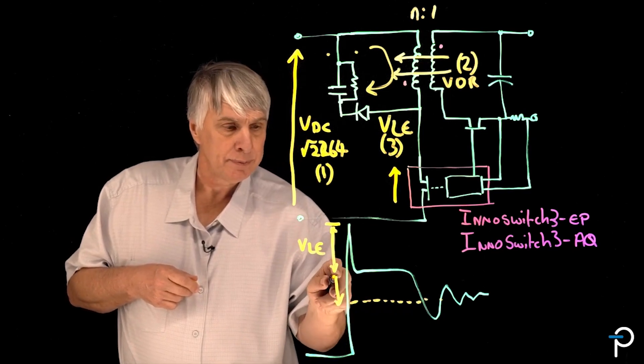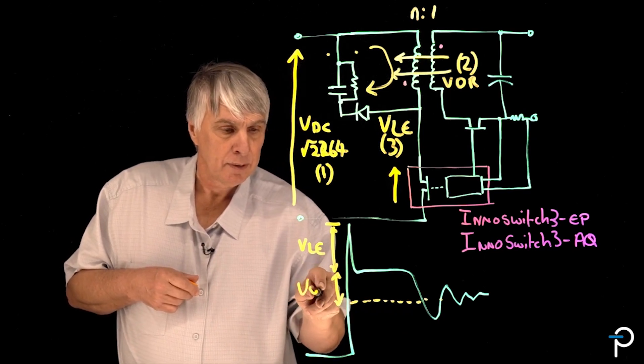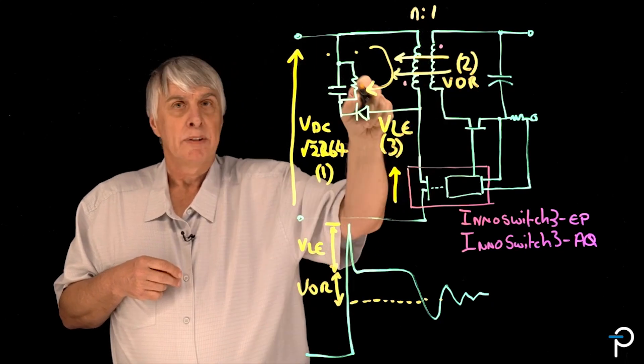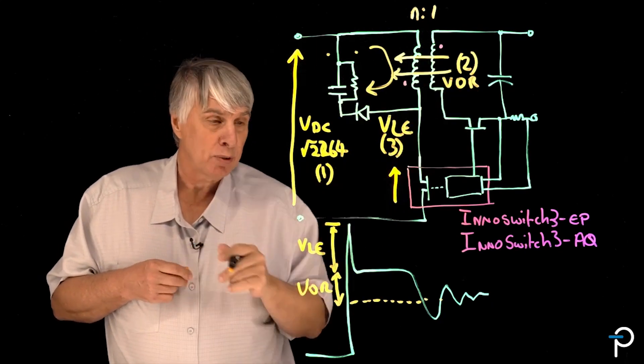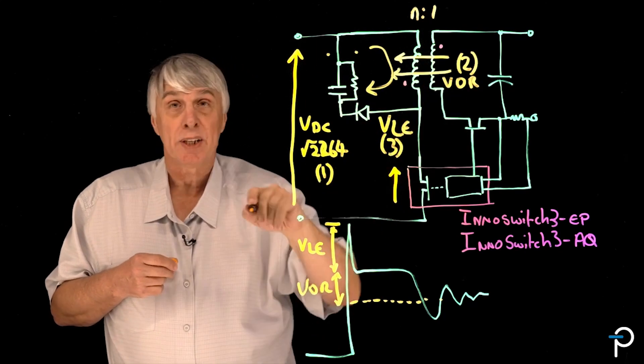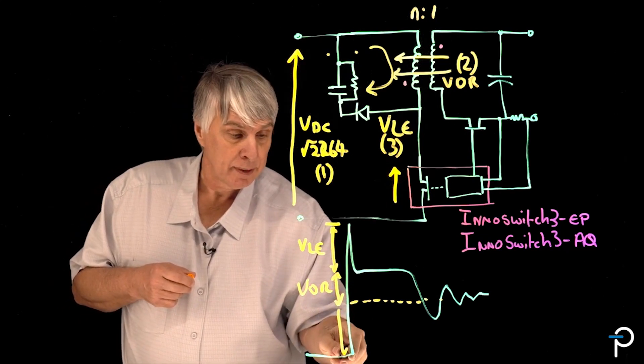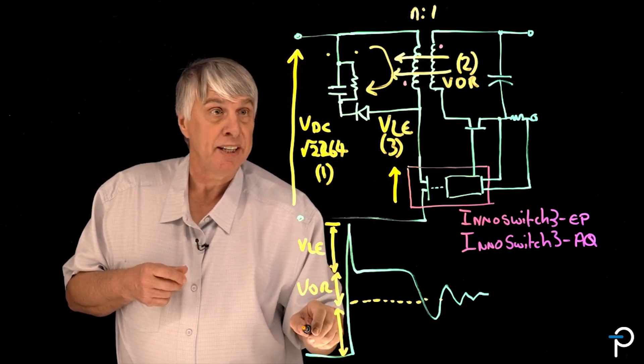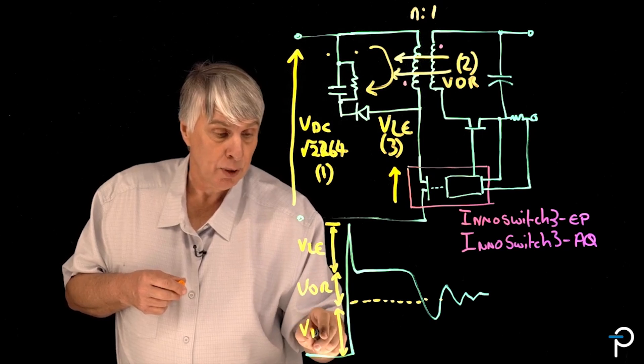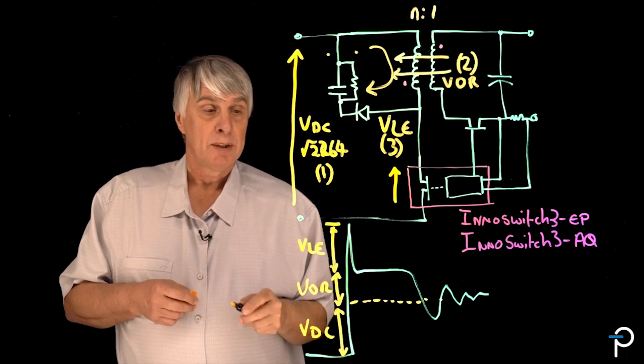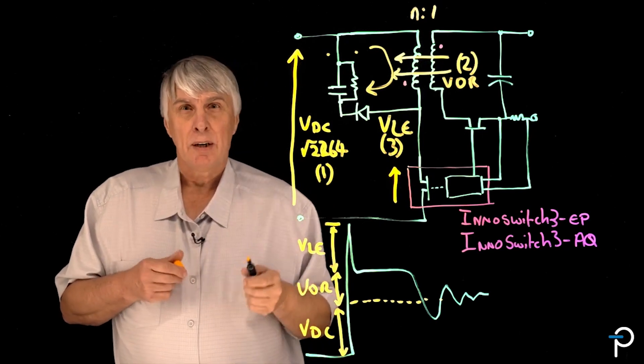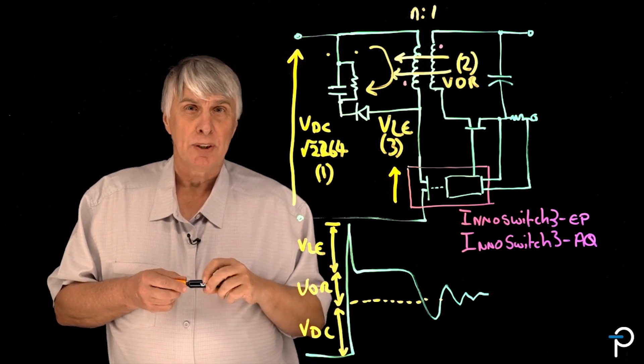We have the VOR energy transferred from the secondary back to the primary, excuse me, voltage reflected from the secondary back to the primary. And then we have the VDC which is derived from the input voltage. Those three elements together are what represent the stress on the power transistor.